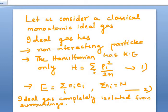Let us consider a classical monoatomic ideal gas such that we know an ideal gas should have non-interacting particles. The Hamiltonian is given by H = Σ pi²/2m, which is equation 1. From our previous classes we know total energy is given by E = Σ ni εi, so that the total ni is given by total N and εi is the individual energy of particles. We know ideal gas is taken to be completely isolated from the surroundings.